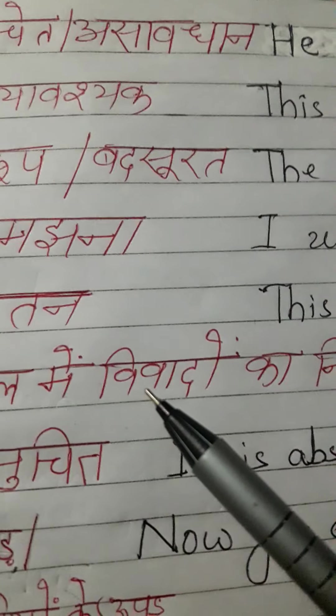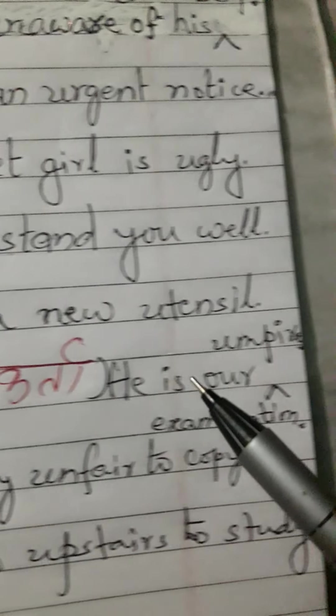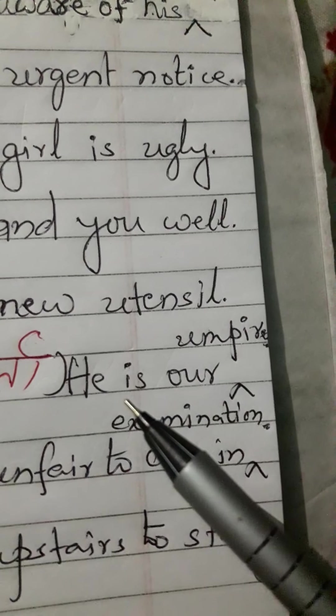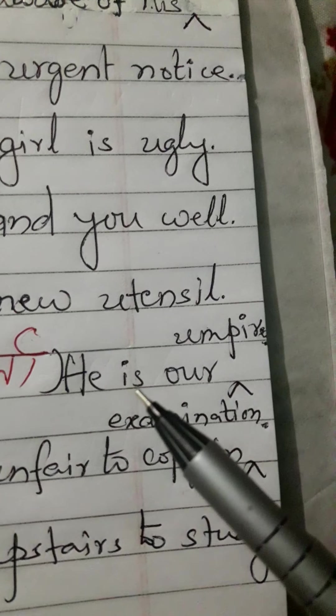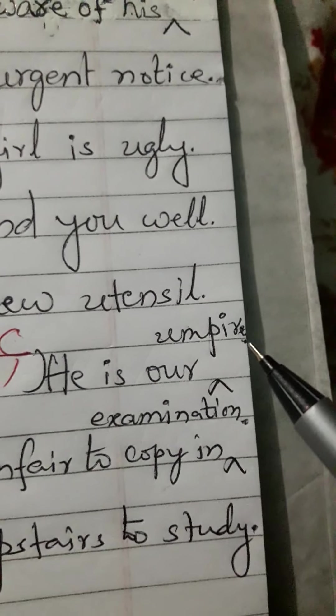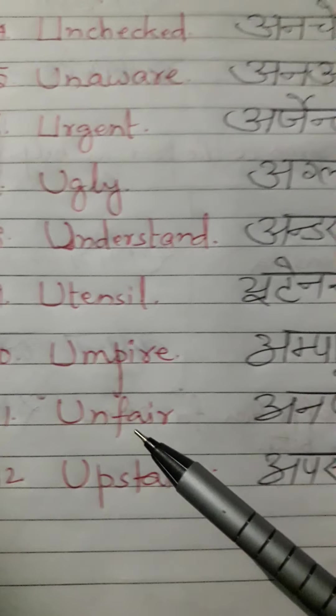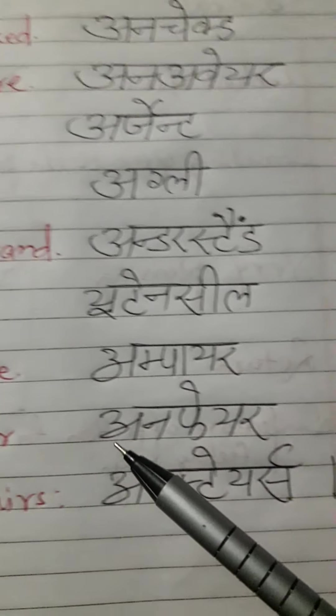Umpire is correctly pronounced as umpire. Hindi meaning: 'khel mein vivadon ka nirnay karta'. Used in sentences: he is our umpire.